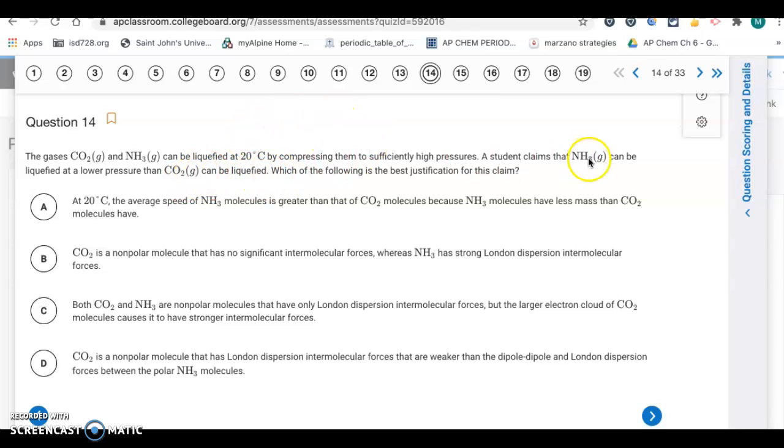The difference between NH3 and CO2 is CO2 is a non-polar molecule with symmetry, so it only has London dispersion forces. But NH3 is a polar molecule, trigonal pyramidal. Letter D: CO2 is a non-polar molecule with London dispersion forces that are weaker than the dipole-dipole and London dispersion forces between the polar NH3 molecules. So it's letter D.